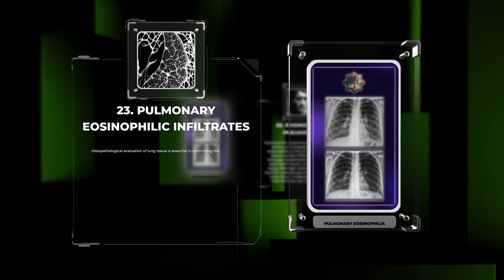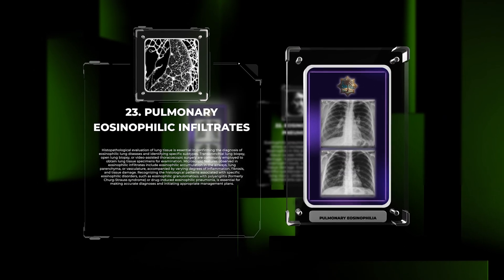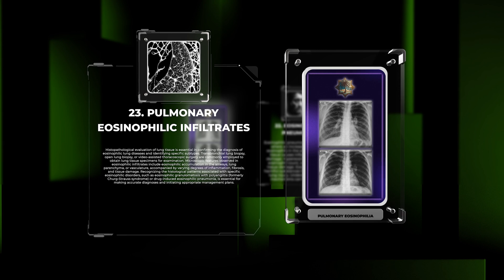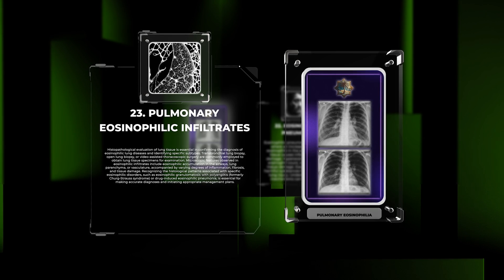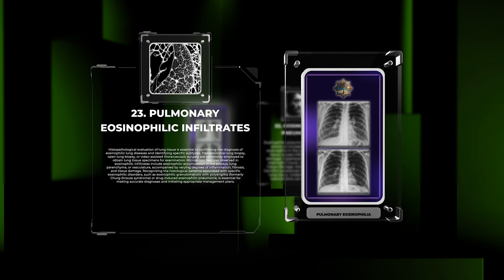Histopathological evaluation of lung tissue is essential in confirming the diagnosis of eosinophilic lung diseases and identifying specific subtypes. Transbronchial lung biopsy, open lung biopsy, or video-assisted thoracoscopic surgery are commonly employed to obtain lung tissue specimens for examination. Microscopic features observed in eosinophilic infiltrates include eosinophilic accumulation in the airways, lung parenchyma, or vasculature, accompanied by varying degrees of inflammation, fibrosis, and tissue damage.